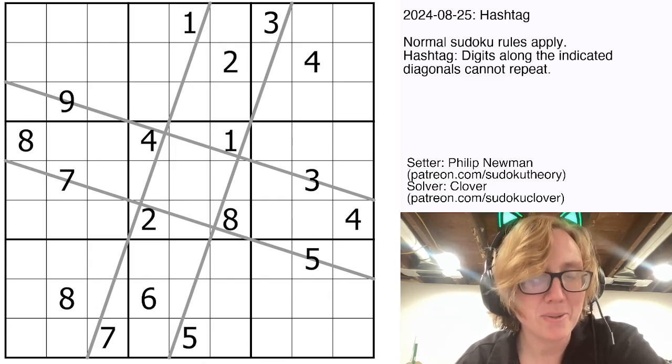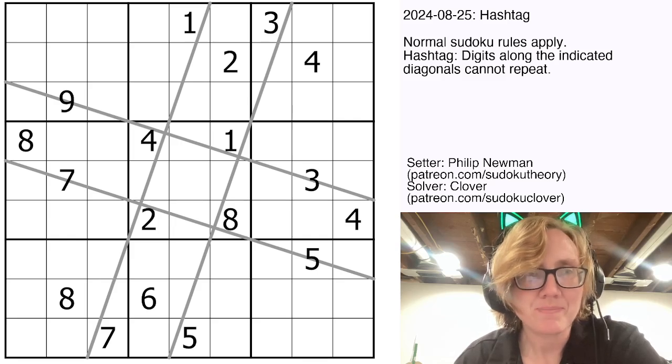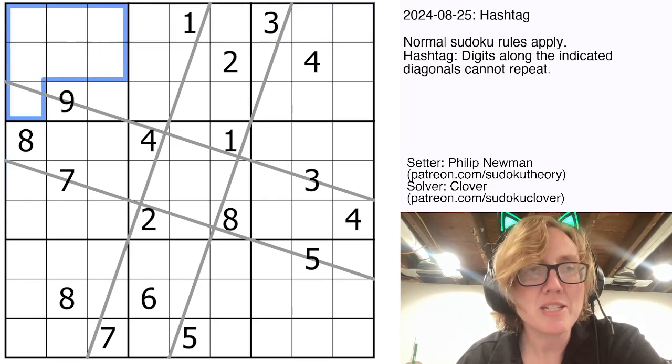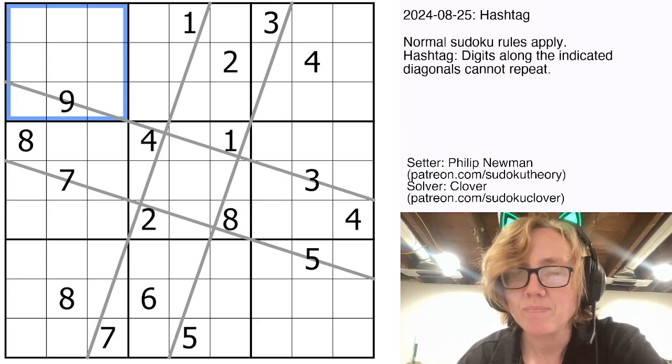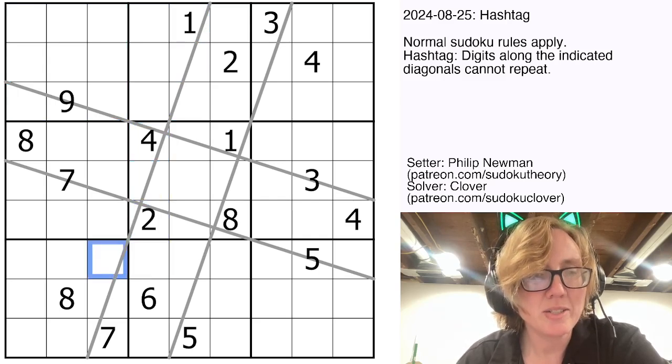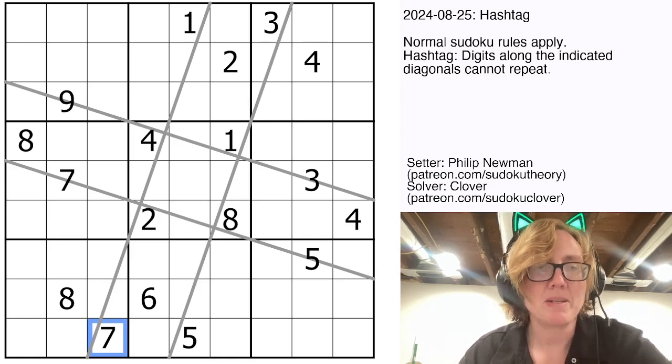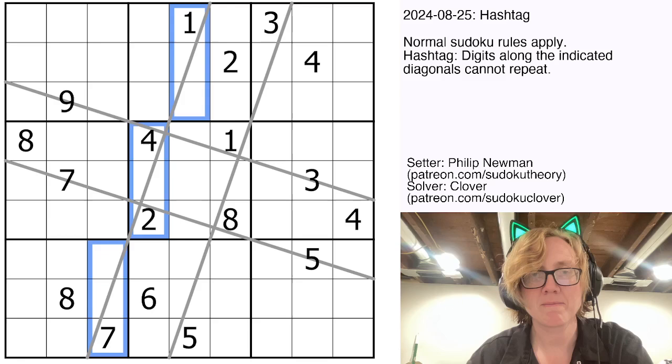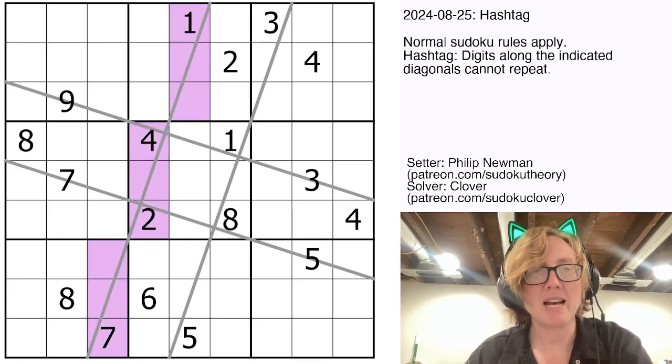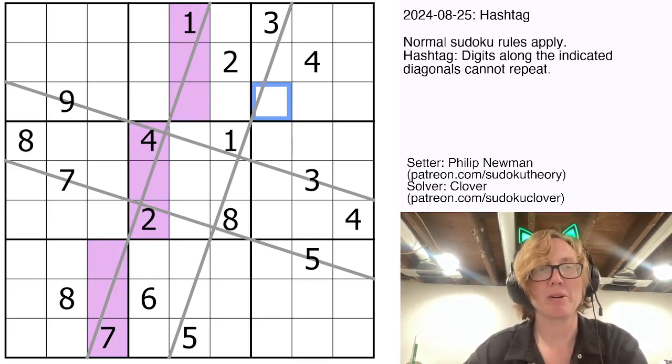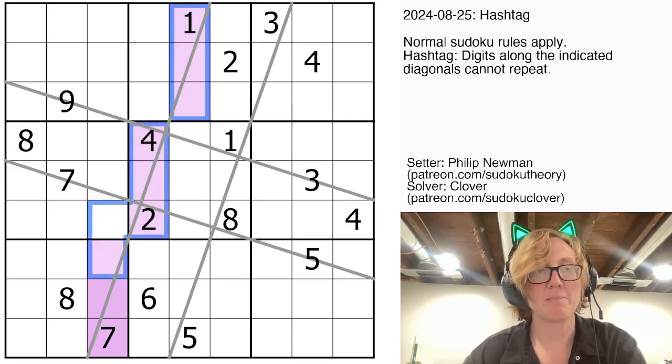Let's have a look. So we have normal Sudoku rules. We're placing the digits 1 through 9 once each in each row, each column and each outlined 3x3 region. And then also we have these gray hashtag lines, and along each of these four intersecting lines, digits can't repeat. So for example, in all of these pink cells, we have to have a complete set of distinct digits from 1 through 9 once each because this gray line passes through them.